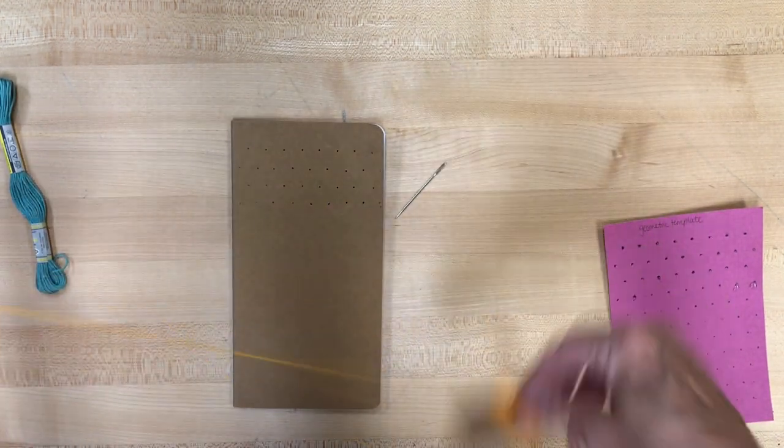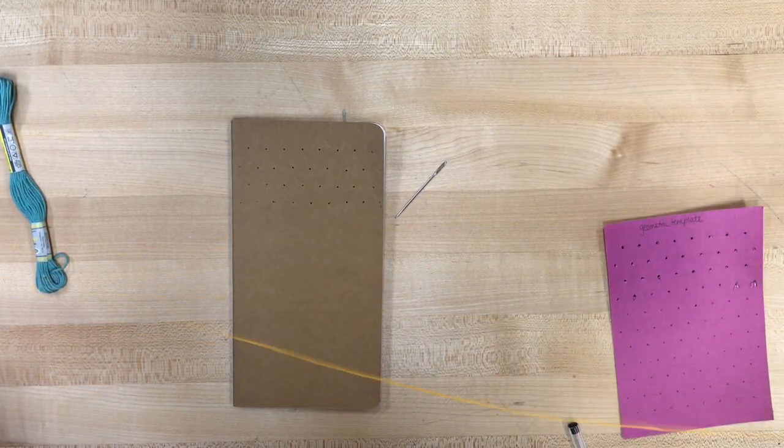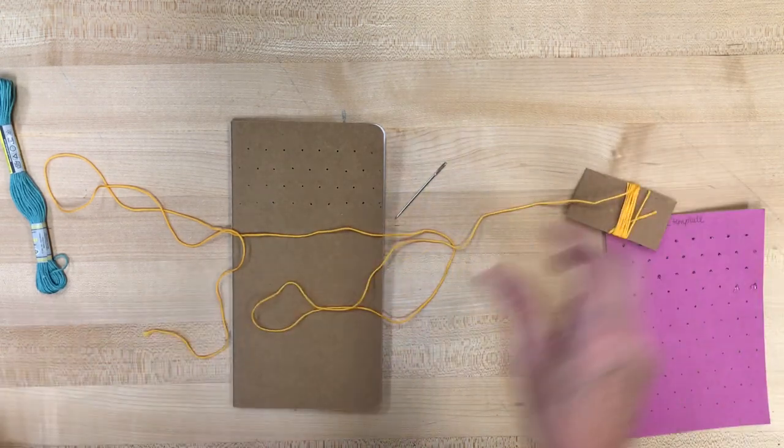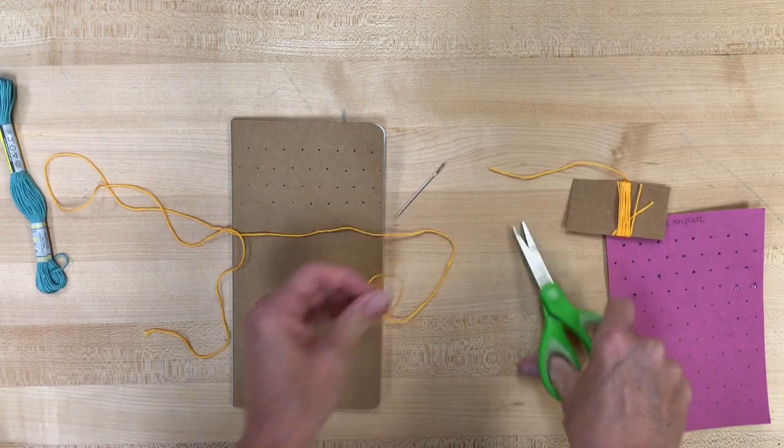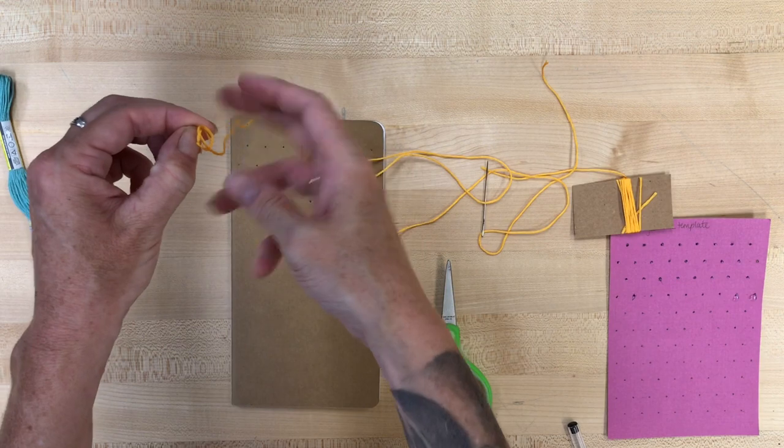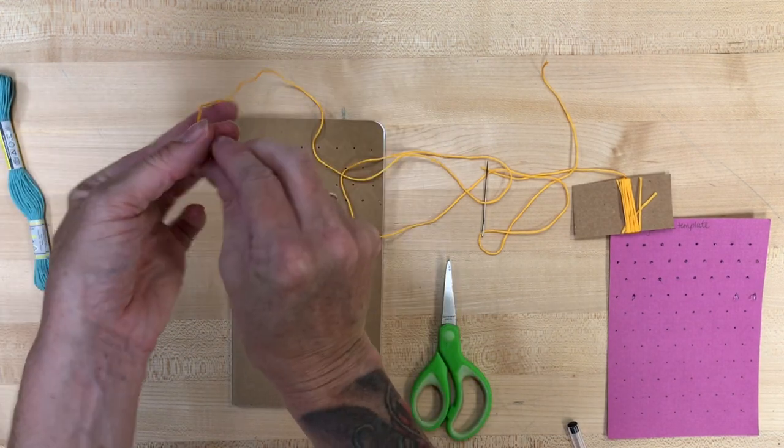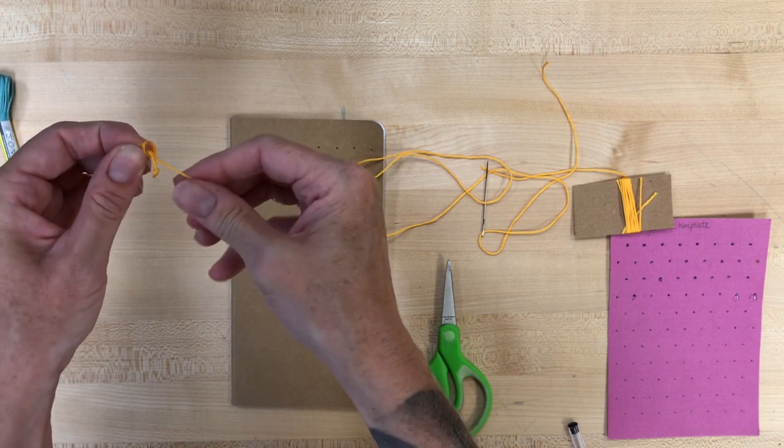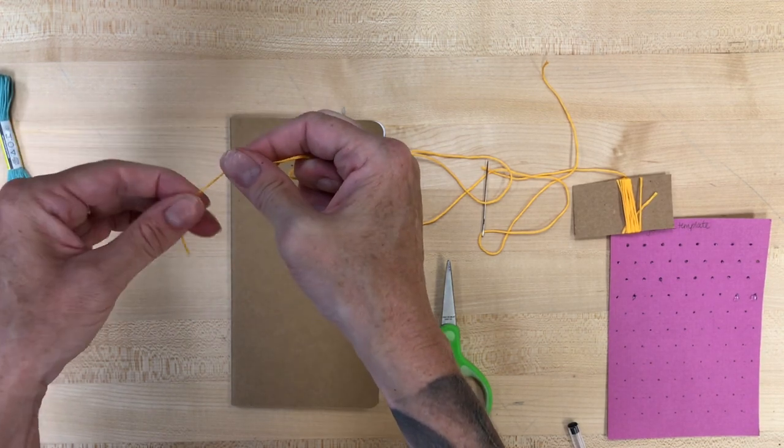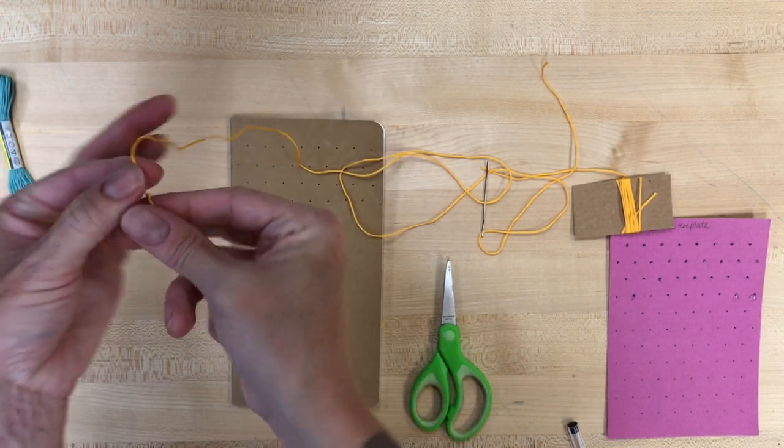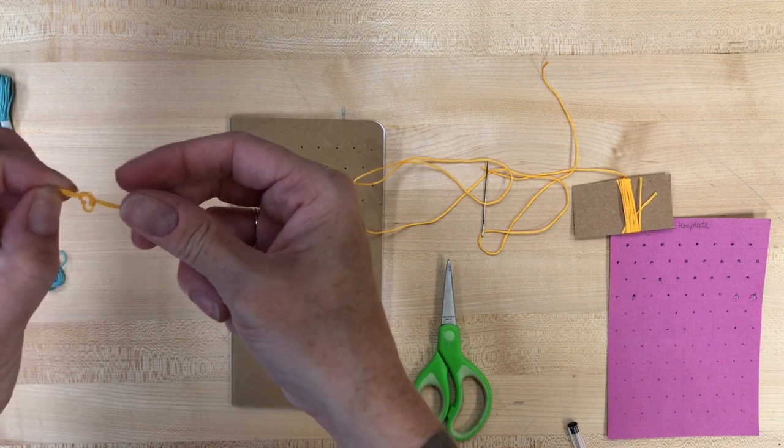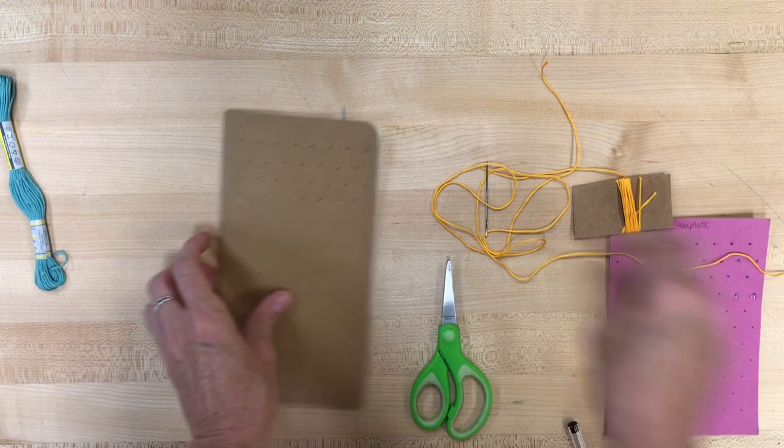Once you have a couple rows of those holes poked, you can take your thread, unwind as much as you're comfortable working with. I usually do an arm's length or so. And you're going to go ahead and thread your needle. And after you thread your needle, you're going to want to go ahead and triple knot the back. Should be a big enough knot that you'll be able to make sure that it secures your embroidery thread on the backside of that notebook.